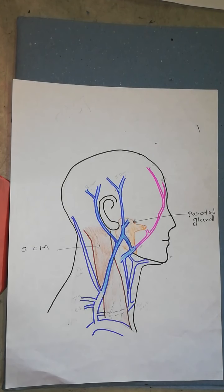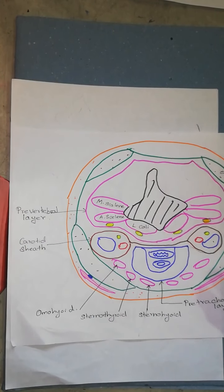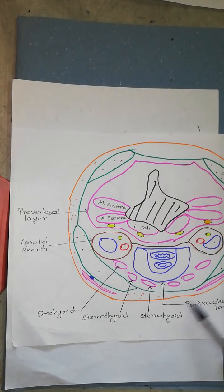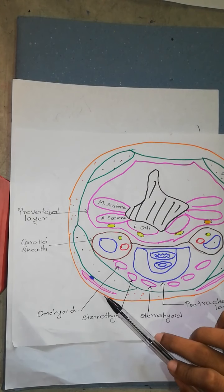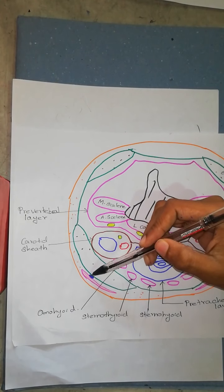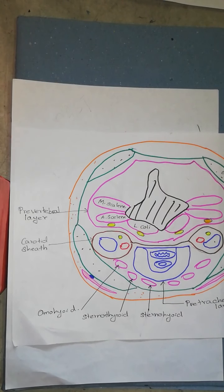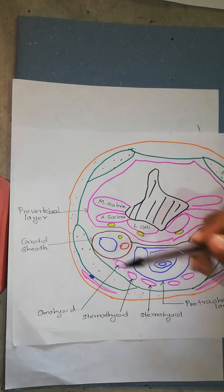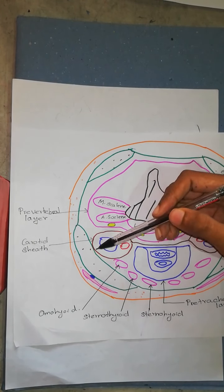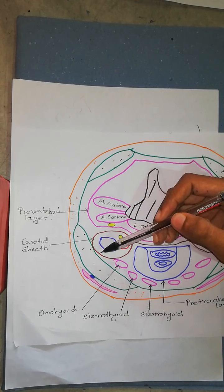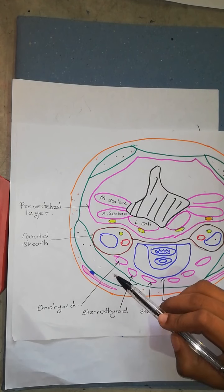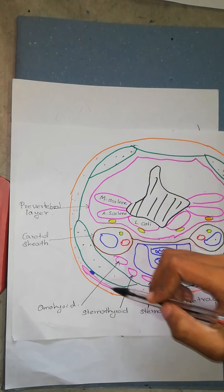Let's get a cross-section of neck at C7 level. The orange colored line is the skin, and you get the superficial fascia. This is the platysma, and you can find the external jugular vein on both sides. The green line is the investing layer of deep fascia, which encloses the sternocleidomastoid. The external jugular vein runs in the plane between the platysma and the investing layer of the deep fascia.